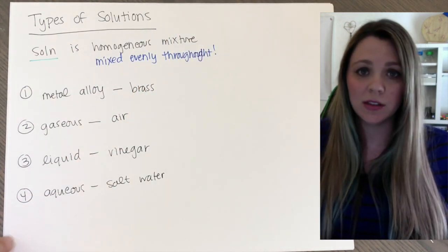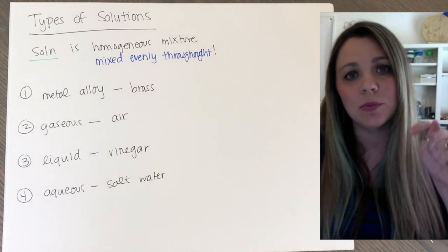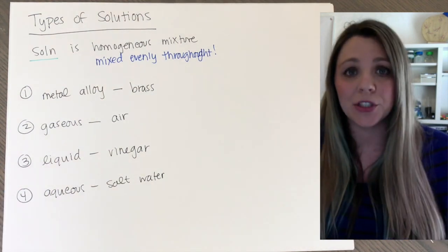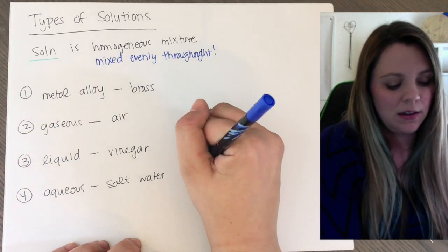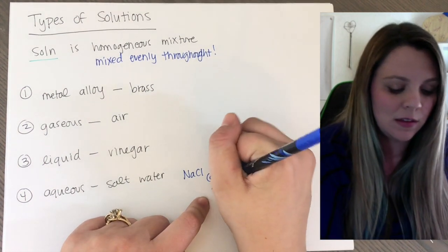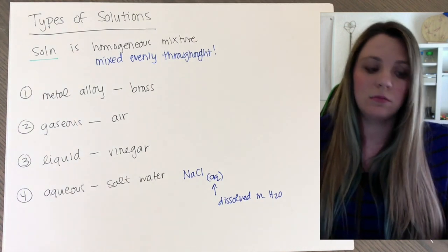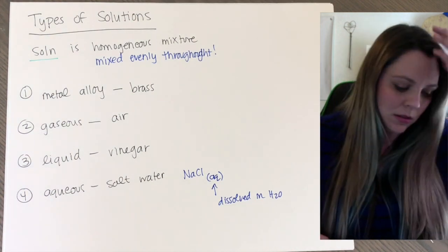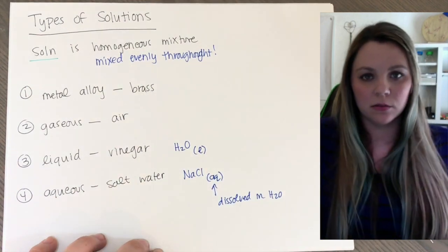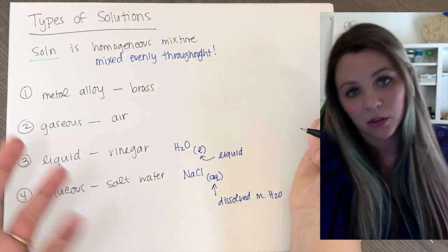The reason this is important, the four different types of solutions is that now you actually have to pay attention to the subscripts when we're doing a chemical reaction or if you're looking at something. So if it said like NaCl and then in parentheses underneath it said AQ, that means it's aqueous. That means it's dissolved in water. It's part of an aqueous solution. If you had a liquid, vinegar is acetic acid or whatever. If you just had like H2O, you had parentheses with an L, like a parentheses in the subscript, that means it's a liquid.